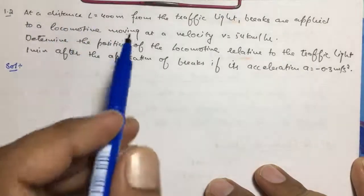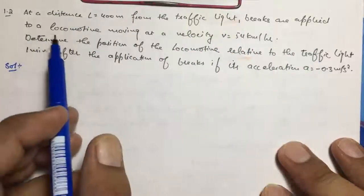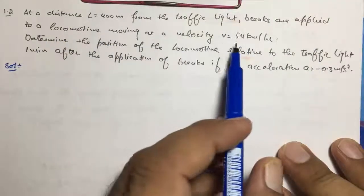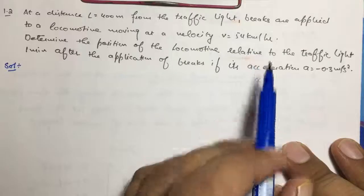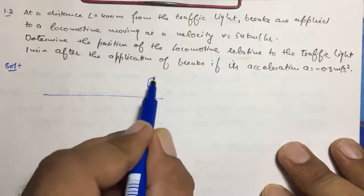At a distance L = 400 meters from the traffic lights, brakes are applied to a locomotive moving at a velocity of 54 km per hour. So let's formulate the problem, we have this traffic lights here.